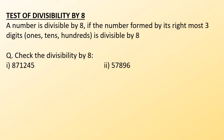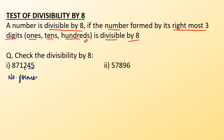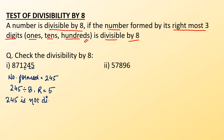To test the divisibility of 8, we check the number formed by its rightmost 3 digits — the digits at the 1's place, 10's place, and 100's place. If that number is divisible by 8, then the whole number is also divisible by 8. In the first number, 5 is at the 1's place, 4 at the 10's place, and 2 at the 100's place, forming 245. When you divide 245 by 8, you get remainder 5, which means 245 is not divisible by 8.